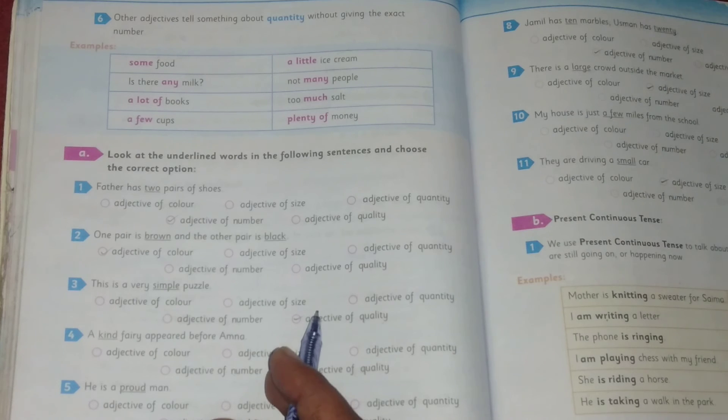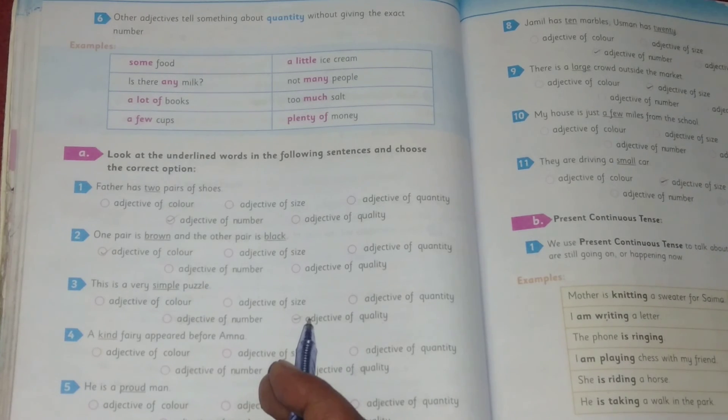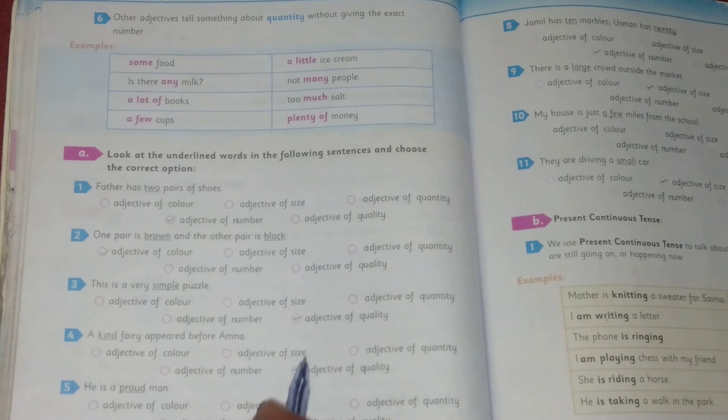So these were kinds of adjectives: adjective of quality, adjective of origin, adjective of color, adjective of size, adjective of number, and adjective of quantity. These were kinds of adjectives. I hope you understand. Keep watching videos. Thanks for watching.